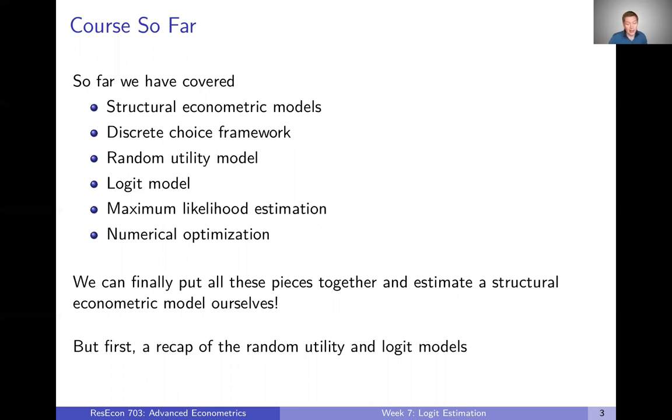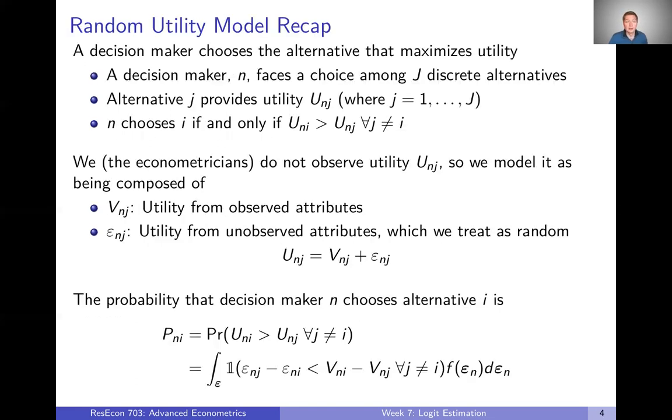But first I want to do, like I said, a quick recap of both the random utility model and the logit model more specifically. So the setup here is that a decision maker, which we can call n, is facing a choice among capital J discrete alternatives. This is just kind of generally called a discrete choice problem. And the random utility model says that a decision maker is going to choose the alternative that maximizes their utility. So every one of these alternatives provides some utility and the decision maker chooses an alternative if and only if that alternative provides the decision maker more utility than every other alternative.